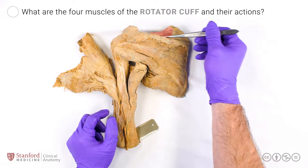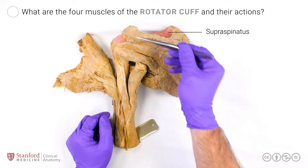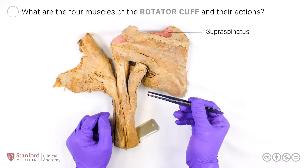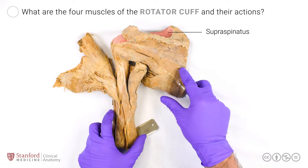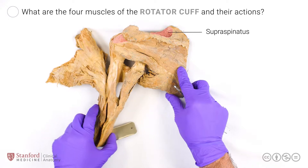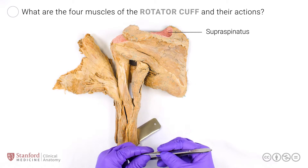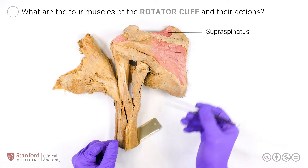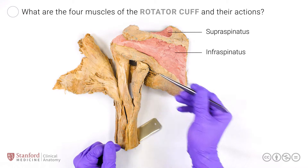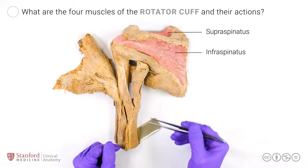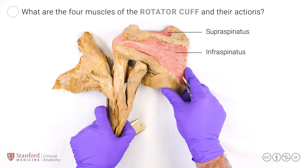The supraspinatus muscle, which runs from the supraspinous fossa through the subacromial space to the greater tuberosity of the humerus and initiates abduction of the humerus. Infraspinatus, which runs from the posterior face of the scapula to the greater tuberosity and functions in external rotation of the humerus.